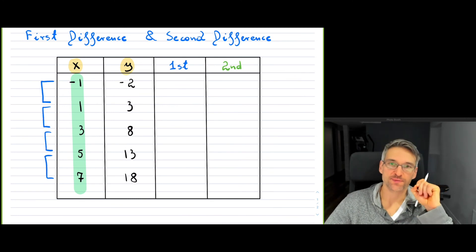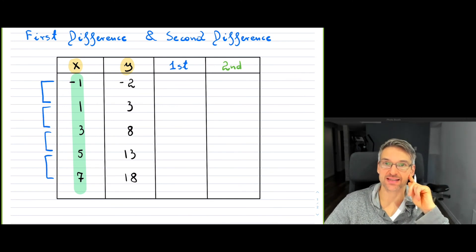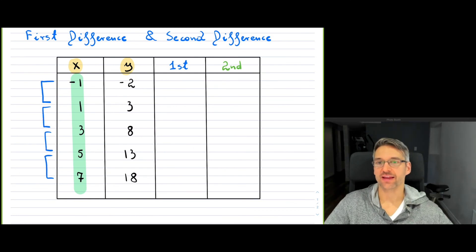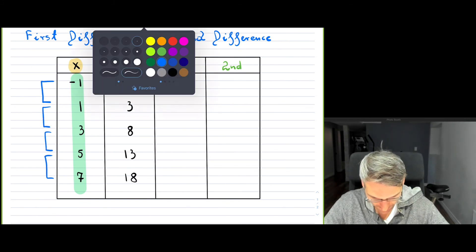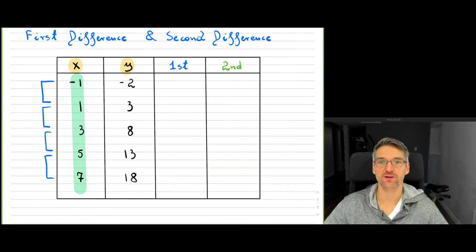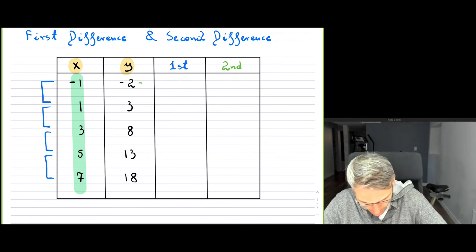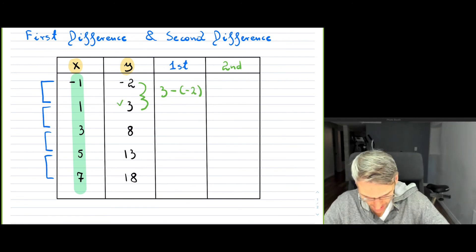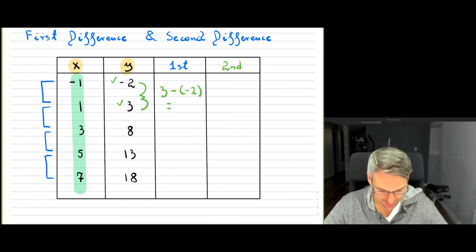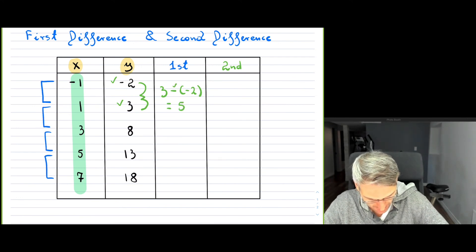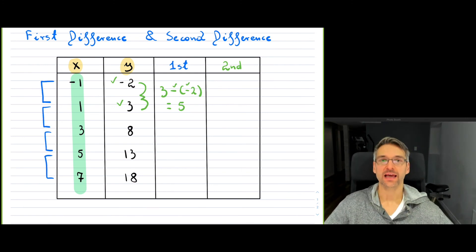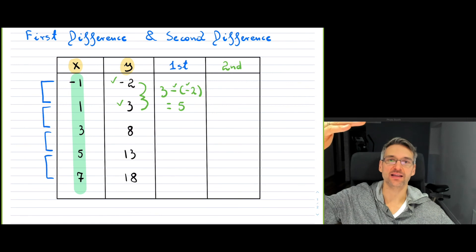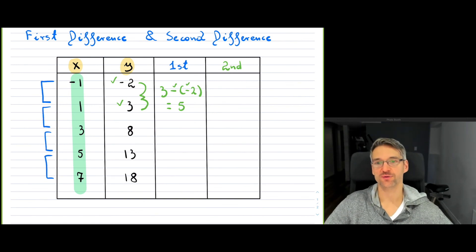So your independent variable x has to have the same change before you can calculate the first difference. The first difference is simply this: you take your dependent variable y and subtract consecutive values. So you take three minus negative two — notice the two negatives become positive — and you get five as your first difference.